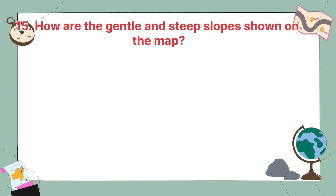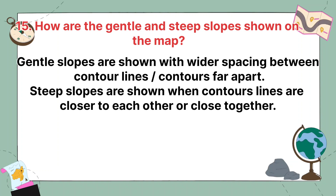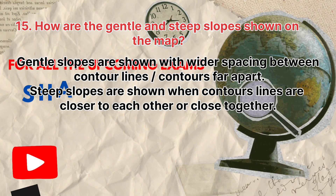How are gentle and steep slopes shown on the map? Gentle slopes are shown with wider spacing between contour lines — contours are far apart. Steep slopes are shown when the contour lines are closer to each other.